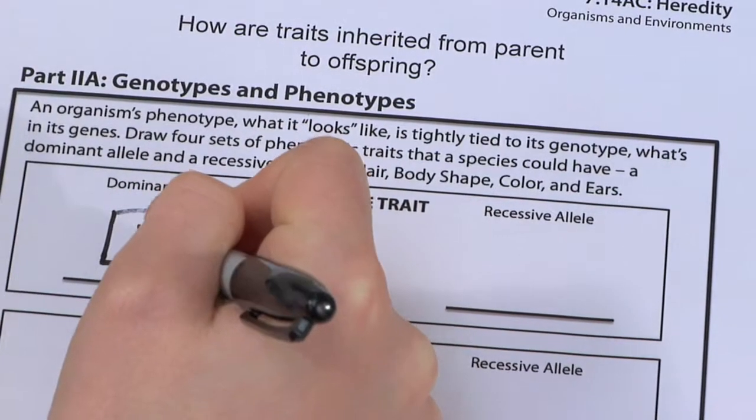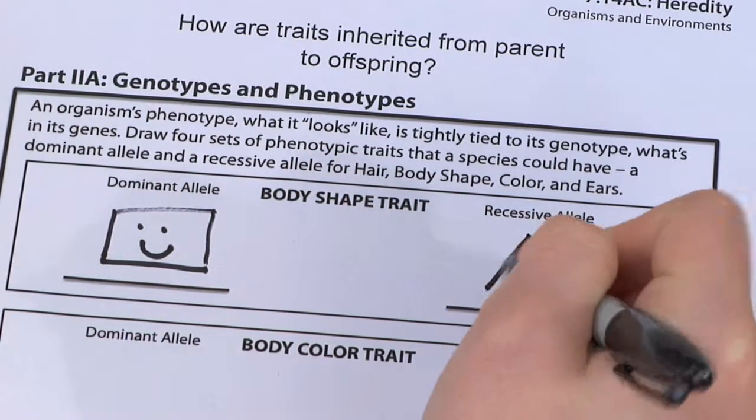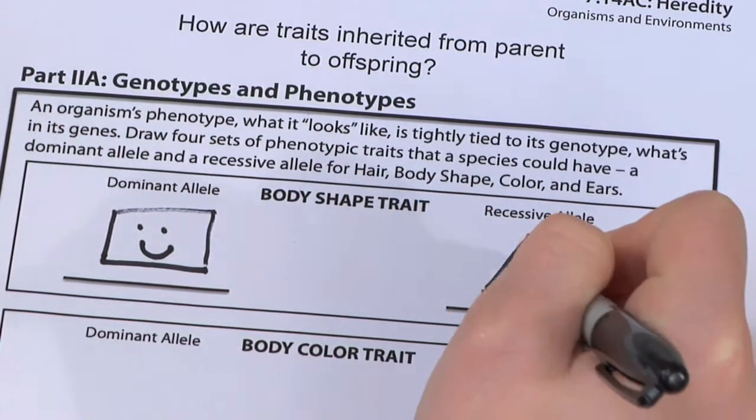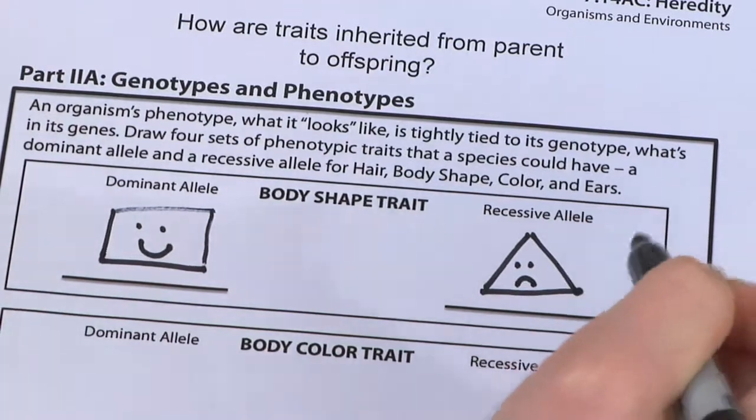For demonstration purposes, we'll use symbols for traits. For body shape, a square will be the dominant expression and a triangle recessive.